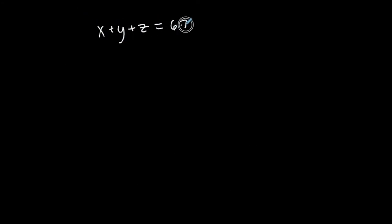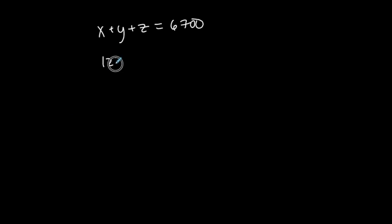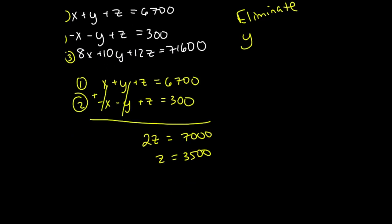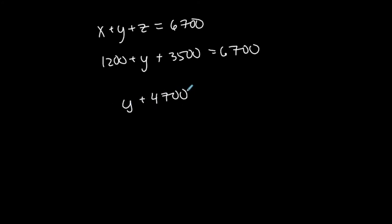Using x plus y plus z equals 6,700: substituting x equals 1,200 and z equals 3,500 gives 1,200 plus y plus 3,500 equals 6,700, so y plus 4,700 equals 6,700, therefore y equals 2,000.